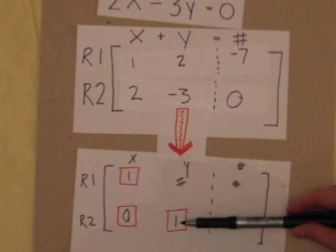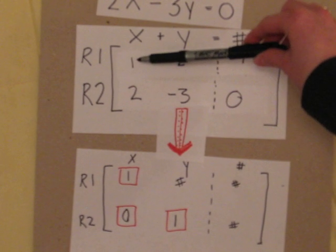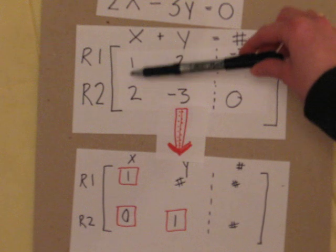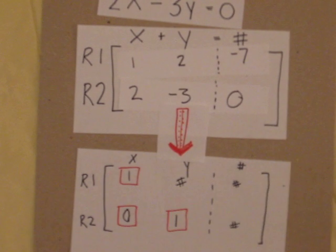Now, notice we're already part way there. We have the 1 in the right place. Our next step is to get R2 to be a 0. How are we going to do that?